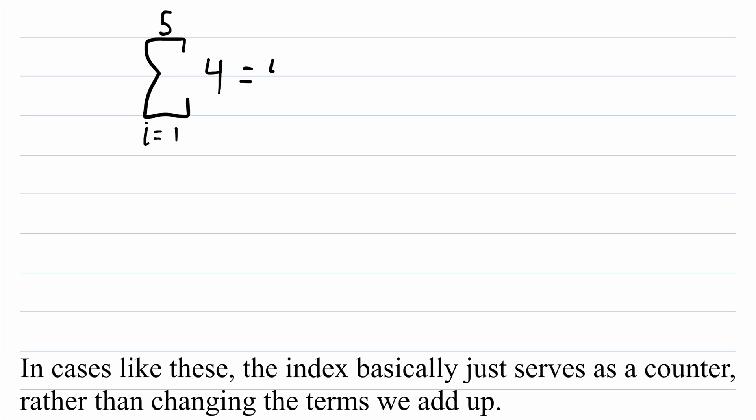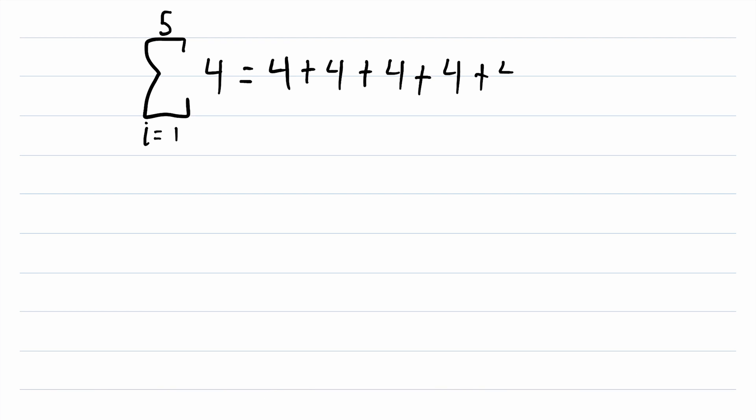So, this is going to be equal to four for i equals one, and then for i equals two, it still just equals four, so we add four again, and then we increment i up to i equals three, we add four again, i equals four, we add four again, and i equals five, we add four again, and that's where we stop because i equals five is the stopping point. You see, because our index wasn't in the summand, the summand never changed.